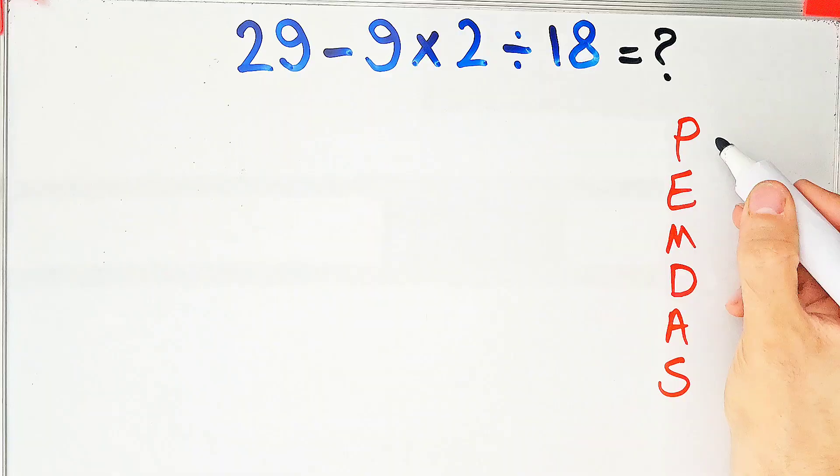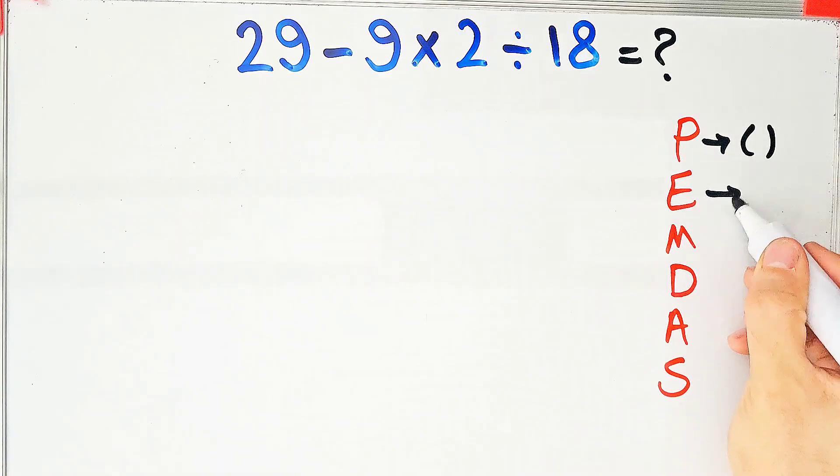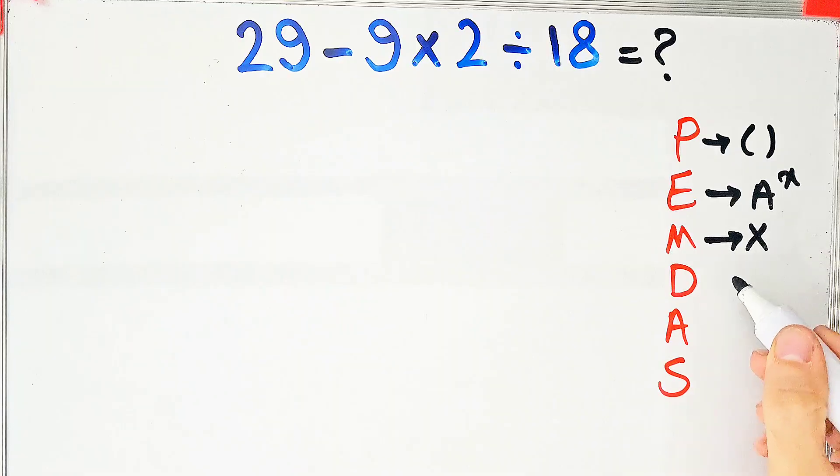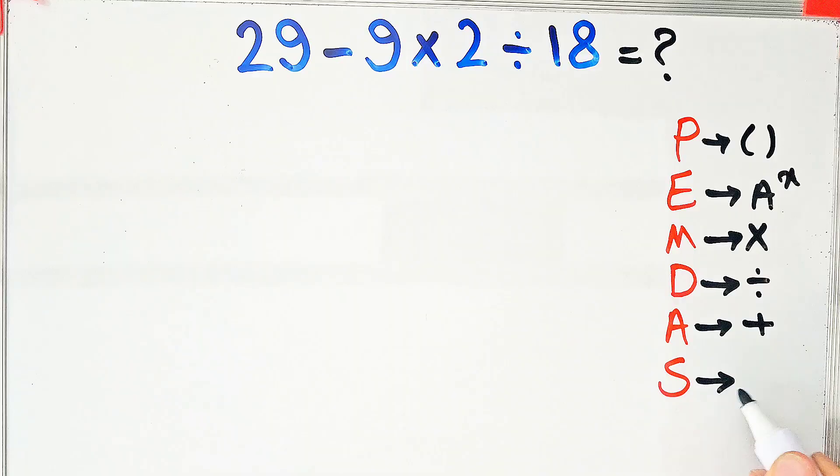In this rule P stands for parentheses, E stands for exponent, M stands for multiplication, D stands for division, A stands for addition and S stands for subtraction.